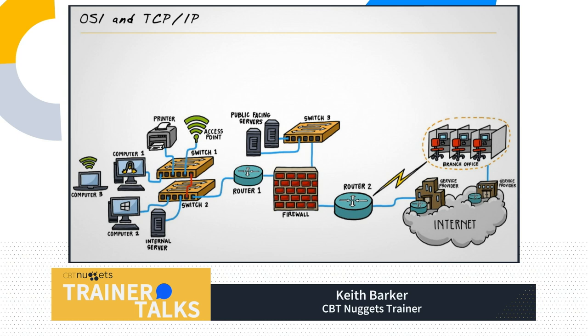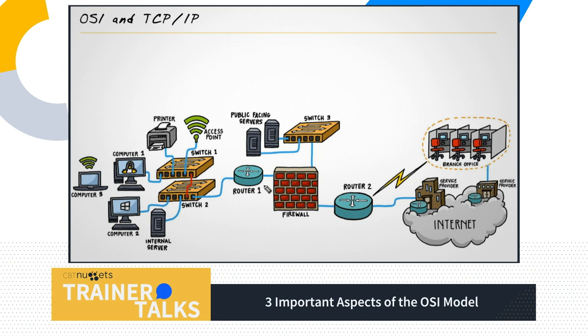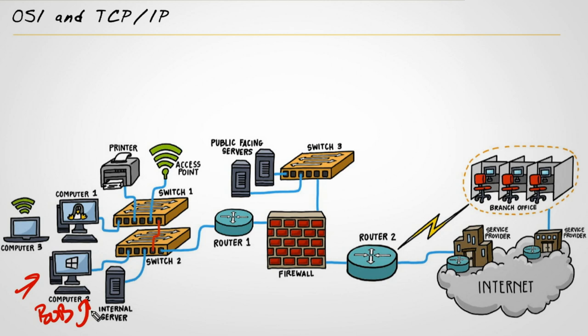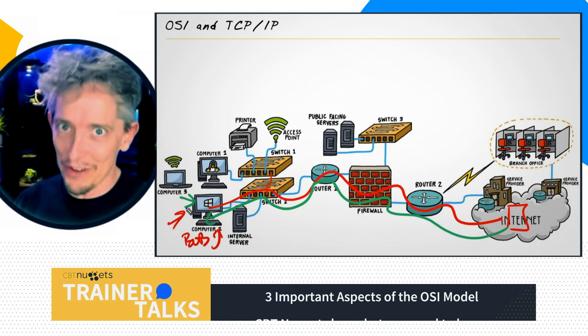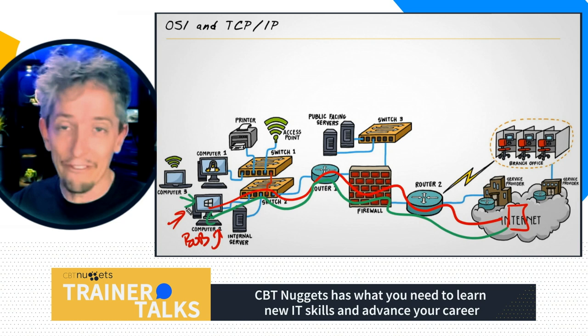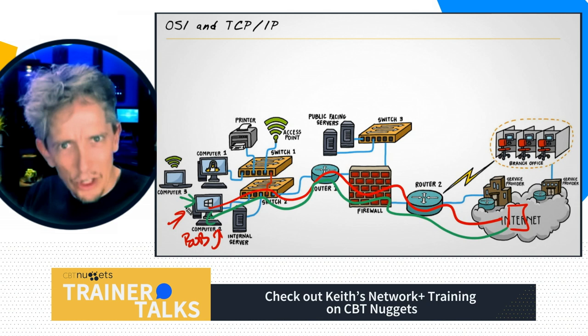Let's imagine this is a network that we are working with or going to build. We've got some layer two switches and some layer three routers, firewalls, and the all-important end user. If Bob wants to go out to the internet or to a server, he opens up a browser, puts in the URL, and his traffic is forwarded over the local network out to the internet to that server. There are a lot of moving parts to make all of that happen, including the use of many different protocols — sets of rules being followed by each device. A common way to understand how these protocols work together is to use a reference model.